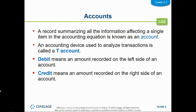A record summarizing all the information affecting a single item in the accounting equation is called an account. The accounting device we're going to use is a T-Account. A couple of new terms are debit and credit — very important terms that we will use every day throughout every transaction we analyze. Debit simply means left and credit simply means right. That's all they mean. They don't mean increase or decrease; they don't mean anything about an account balance going up or going down. They simply mean left and right.